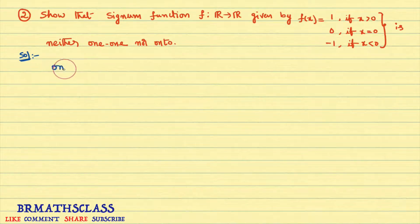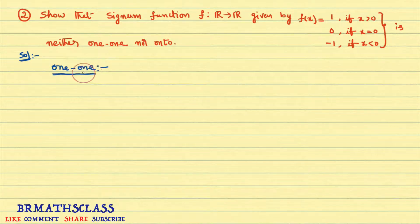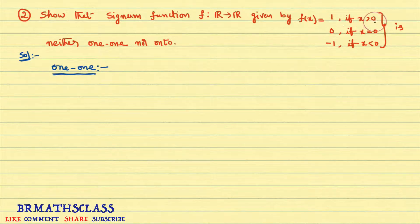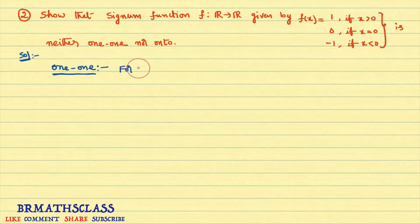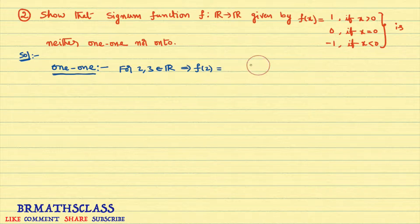First, we will check the one-one condition. The definition of one-one function is: different elements must have different images. We can easily see that whenever x > 0, f(x) = 1. So I will take two different numbers, say 2 and 3. Both are real numbers. f(2): since 2 > 0, the function gives value 1, so f(2) = 1.